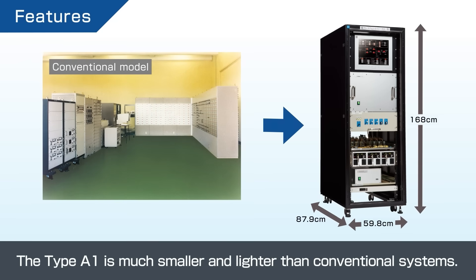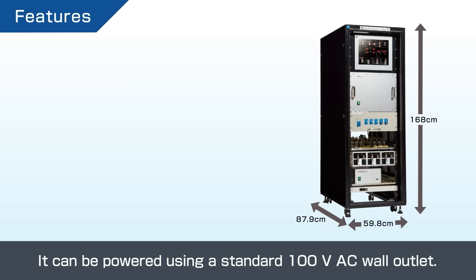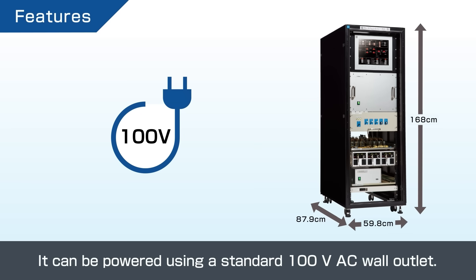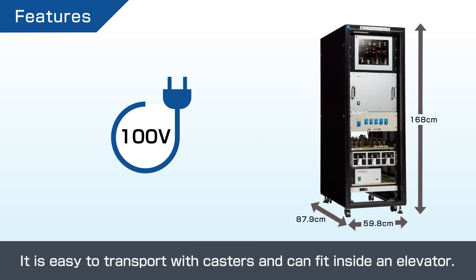The Type A1 is much smaller and lighter than conventional systems. It can be powered using a standard 100-volt AC wall outlet. It is easy to transport with casters and can fit inside an elevator.